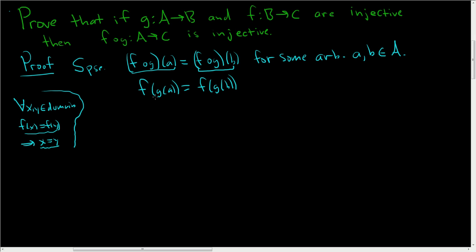Now here we have f of g of a equal to f of g of b, but f is an injection. Therefore, little g of a is equal to little g of b. And this step here is because f is injective. It's one of the key steps.